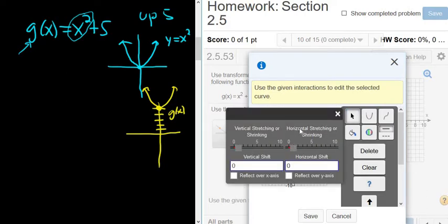And then it says vertical stretching or shrinking, horizontal stretching or shrinking. We're not doing any of that. And so we're going up 5. So it looks like we have a vertical shift, because vertical is up and down. So I'm going to go over here. I'm going to put 5.